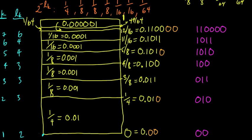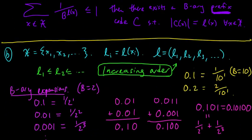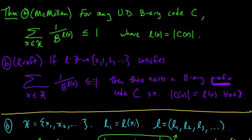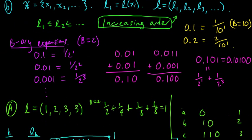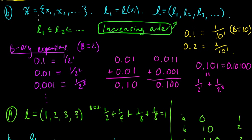We looked at a couple examples of how to construct a prefix code for a given set of lengths, granted that those lengths satisfy the Kraft inequality. So let's briefly recap what we did in the procedure. First, we labeled the x's in our source alphabet so that the corresponding lengths were in increasing order, or non-decreasing order more precisely.